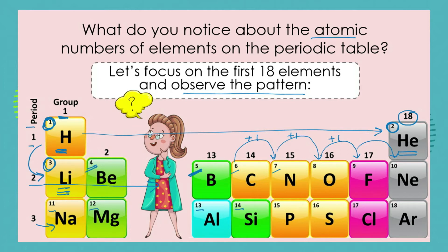Do you remember from our previous lesson — what is this thing called an atomic number? The atomic number equals the number of protons present in an atom of that element. So hydrogen has one proton, beryllium has four, boron has five, and so on. This means that across a row or period, our atoms are getting heavier and heavier because we're adding a proton each time.